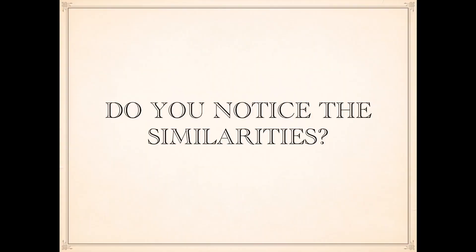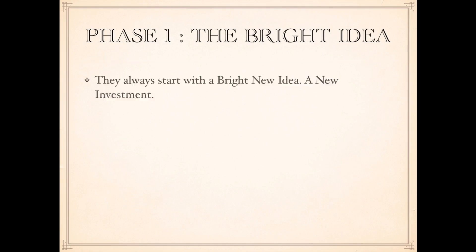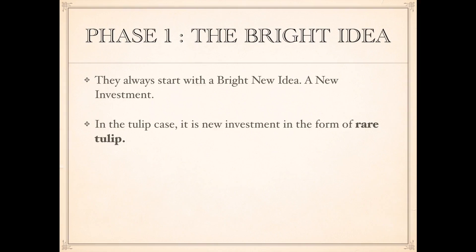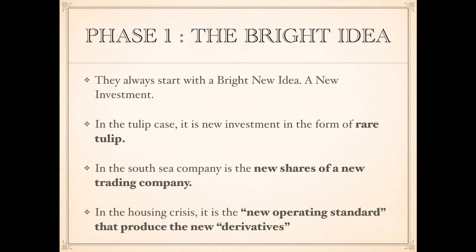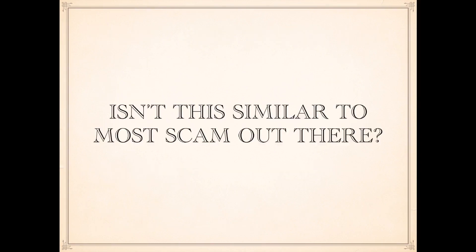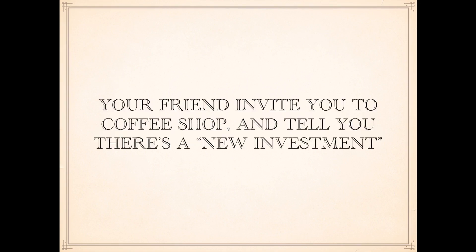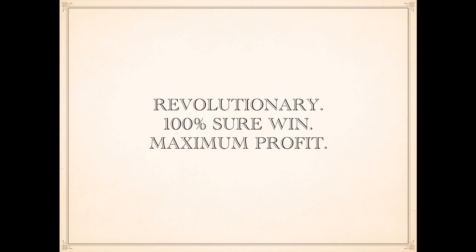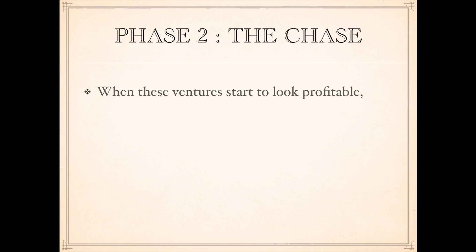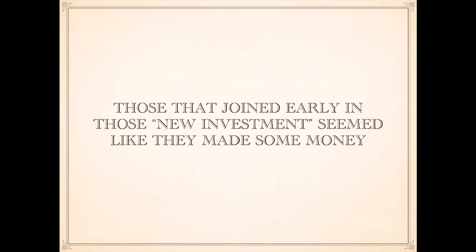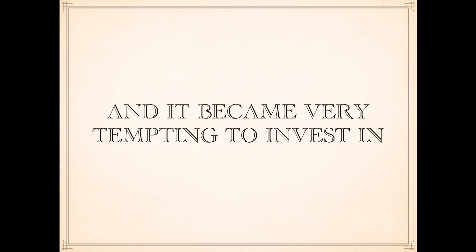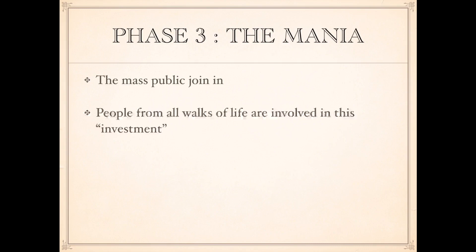What have you learned from all these stories? Do you notice the similarities? Phase one: the bright idea. Bubbles always start with a bright new idea — a new investment, a story. In the tulip case it was the exotic red tulip. In the South Sea case it was shares of a new trading company. In the housing crisis it was the new derivative operating standard. Isn't this similar to most scams — your friend invites you to a coffee shop and tells you there's a new revolutionary investment with 100% guaranteed maximum profit? When these ventures start to look profitable, speculators rush in, driving up prices even more.